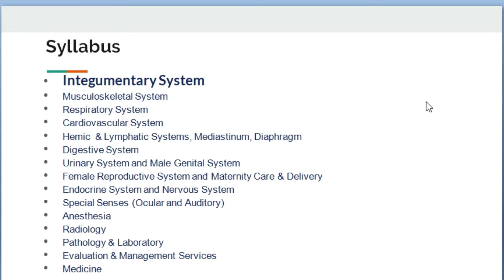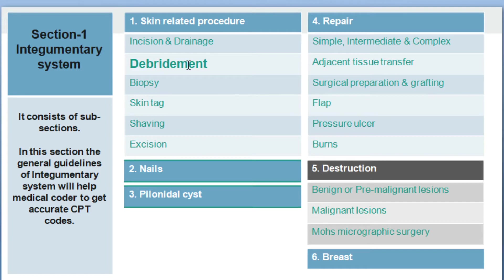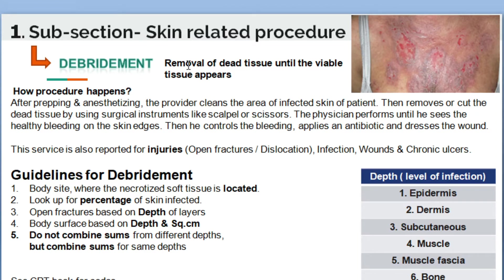In this section, which is related to skin procedures, let's start. What is debridement? It is the removal of dead tissue until the viable tissue appears. We need to know this procedure and what the physician does for a patient who is suffering from dead tissues.